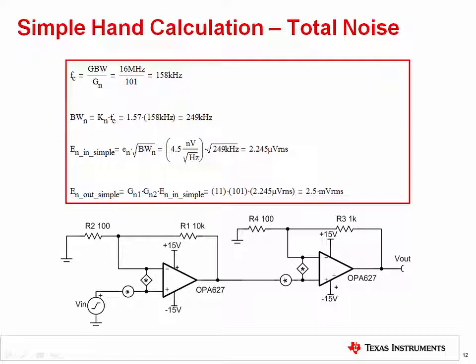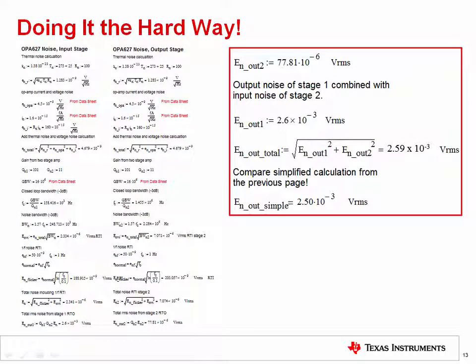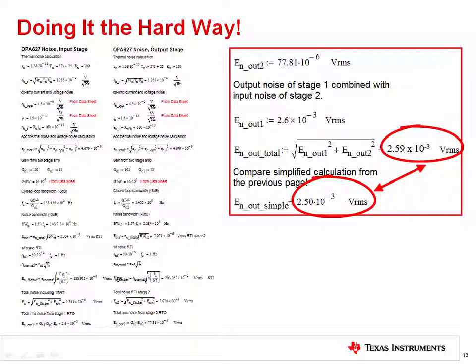Now that we have applied all the rules, let's do the simplified calculation for the entire system. In this example, we can ignore current noise, 1/f noise, resistor noise, and second stage noise. The only factor we really need to consider is the voltage noise of the input stage. To find the system output noise: first, find the noise bandwidth of the input stage; second, use the broadband noise equation to calculate the RMS input noise; then multiply by the total gain for both stages. In this example, the total noise is 2.5 millivolts RMS. The full calculation considering all factors gives 2.59 millivolts RMS — very close to the simplified result. Applying the rules helped us gain insight into the key factor affecting the noise performance of this system, which was the first stage input voltage noise. Now we know what should be modified to reduce the overall system noise.